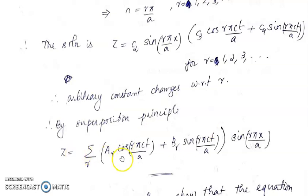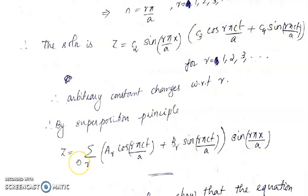Replacing the arbitrary constants — c₂c₃ by Aᵣ and c₂c₄ by Bᵣ — the general solution is z = Σᵣ [Aᵣcos(πrct/a) + Bᵣsin(πrct/a)]·sin(rπx/a). That is the required solution for the first problem.